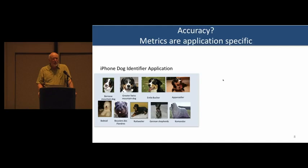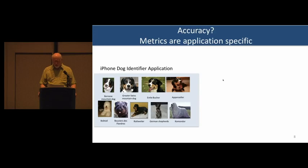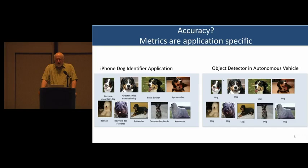If you want to do a dog identifier for an iPhone app, you want to distinguish among a wide variety of different dogs. But if you're building an autonomous driving system and building an object detector, those dogs are just dogs. I don't know anybody who's really trying to distinguish between a dachshund and a greyhound in terms of their object detector.